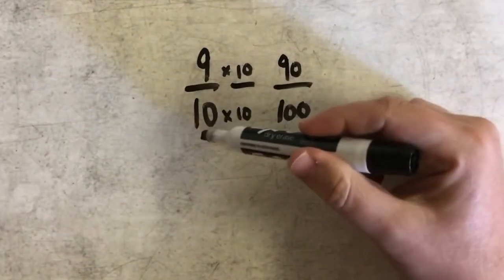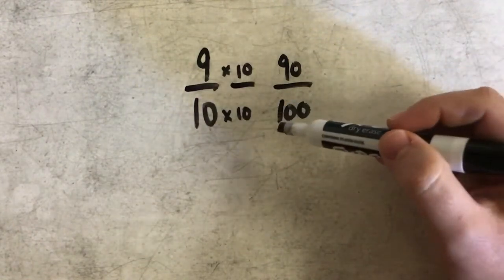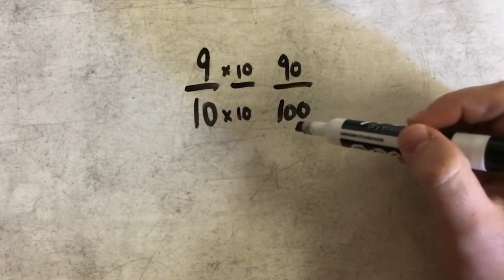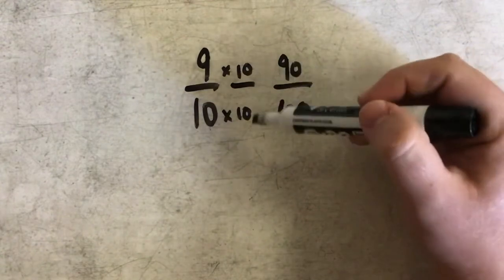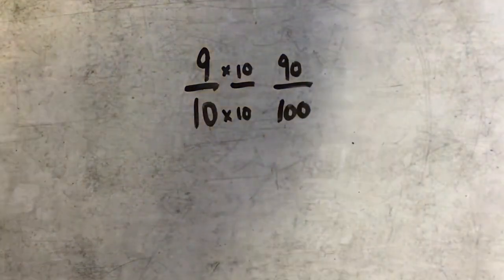So if I'm trying to write a fraction with a denominator of ten as an equivalent fraction with a denominator of one hundred, all I need to do is multiply the top and the bottom, the numerator and the denominator, by ten.